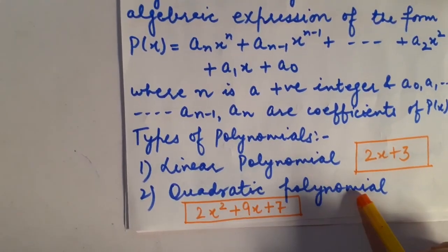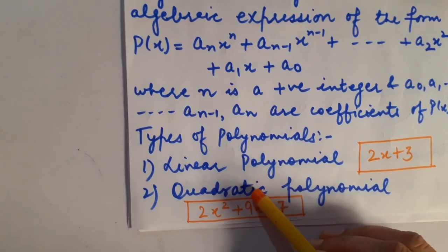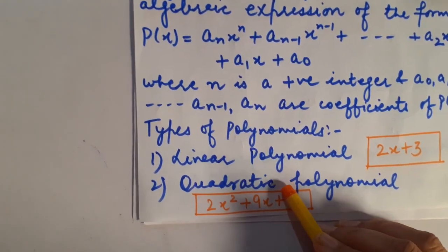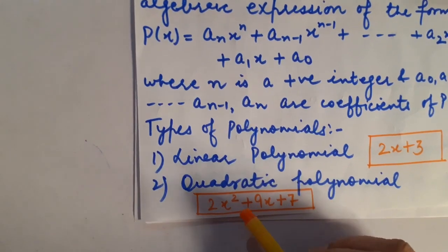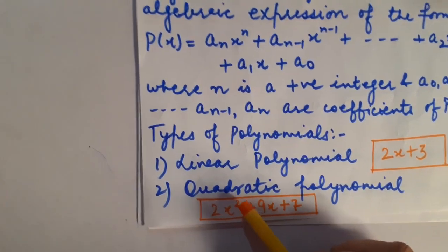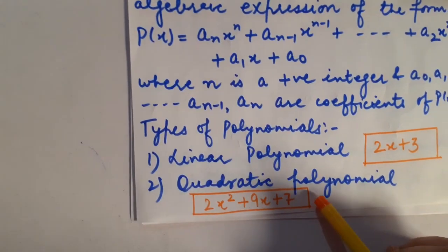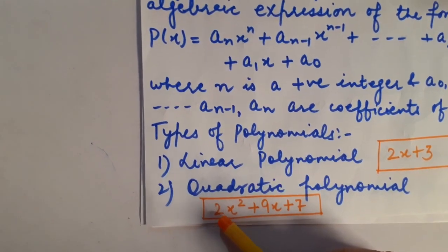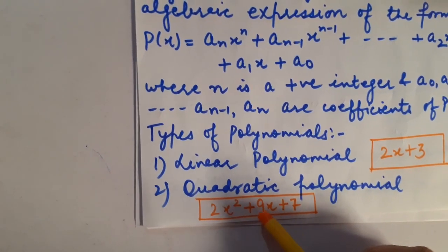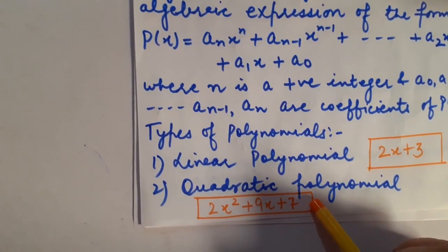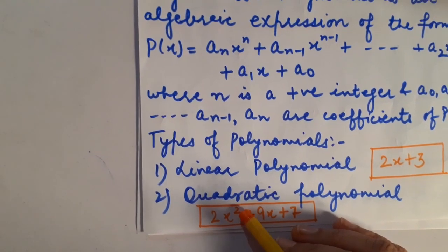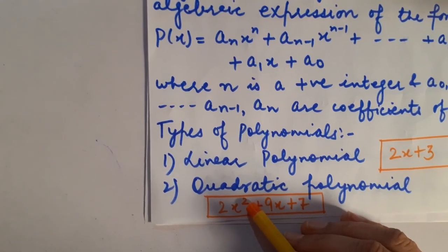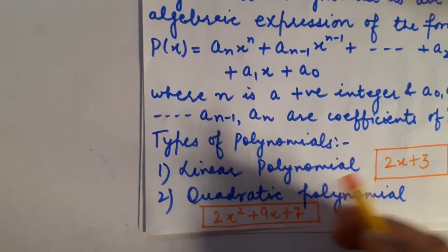Next is quadratic polynomial — clear again from the name itself. Quadratic polynomial is that polynomial in which the degree of the variable must be 2. The example is 2x² + 9x + 7, and the highest power of the variable present in it is 2.